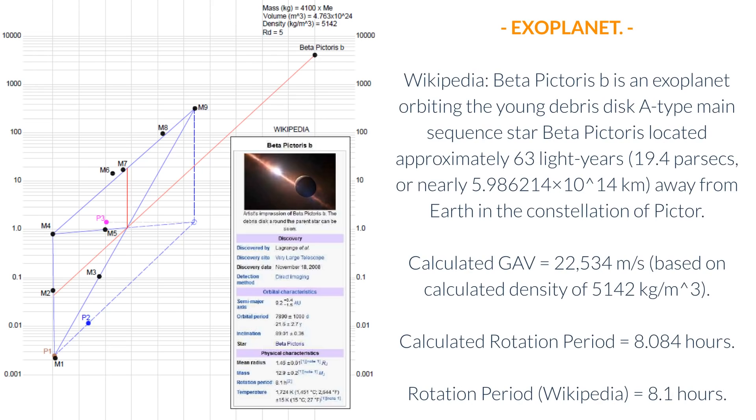Exoplanet. Wikipedia: Beta Pictoris B is an exoplanet orbiting the young debris disk A-type main sequence star Beta Pictoris located approximately 63 light-years, 19.4 parsecs, or nearly 5.986214 times 10 to the 14 kilometers away from Earth in the constellation of Pictor. Calculated GAV equals 22,534 meters per second, based on calculated density of 5,142 kilograms per cubic meter. Calculated rotation period equals 8.084 hours. Rotation period Wikipedia equals 8.1 hours.